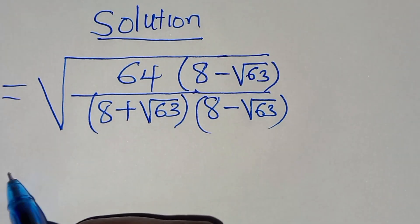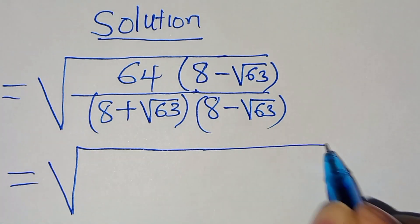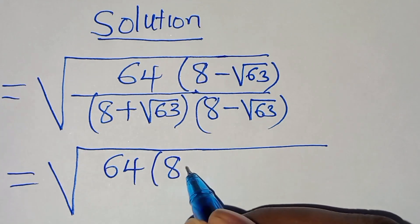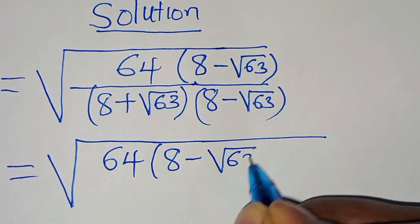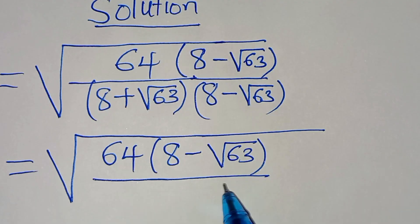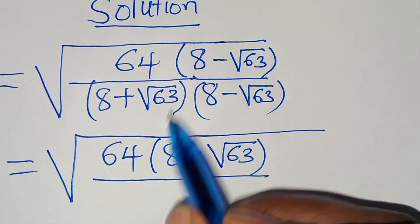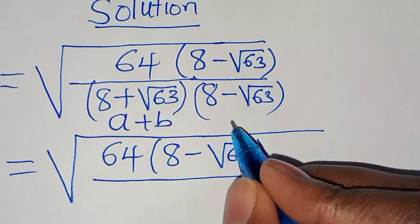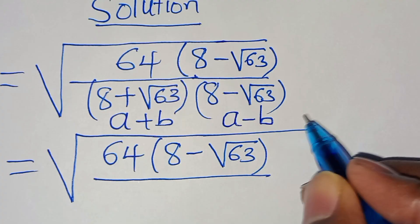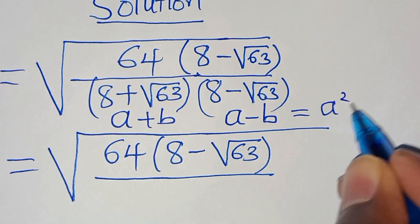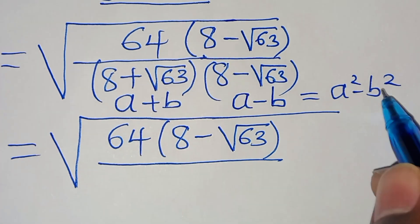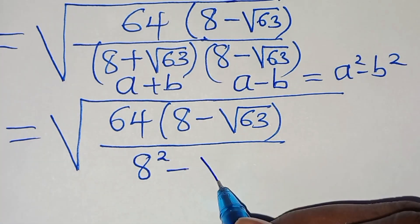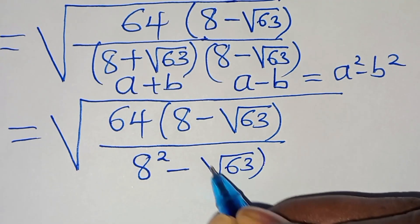In the numerator we have square root of 64 multiplied by 8 minus square root of 63, divided by the denominator 8 plus square root of 63. This is in the form of a plus b times a minus b, which we can express as a squared minus b squared — the difference of two perfect squares. So we have 8 squared minus square root of 63 raised to the power of 2.